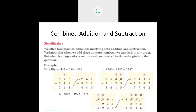For 8540 minus 325 plus 2347: first subtract 8540 minus 325 to get 5415, then add 2347 to get 7762. For 5894 minus 973 minus 875: first subtract to get 3921, then subtract 875 to get 3046. This is how you solve combined addition and subtraction problems. Let's now see the problems in your textbook.